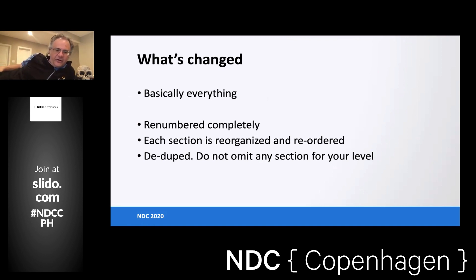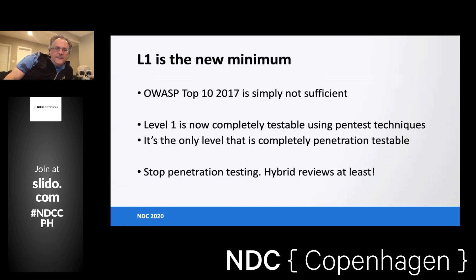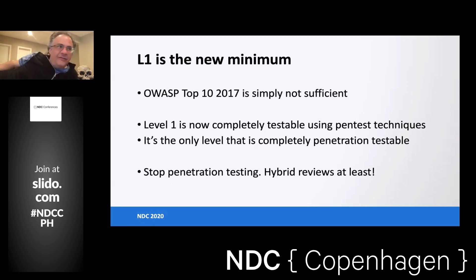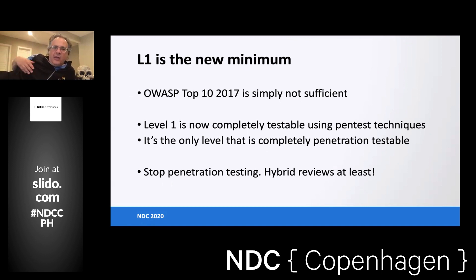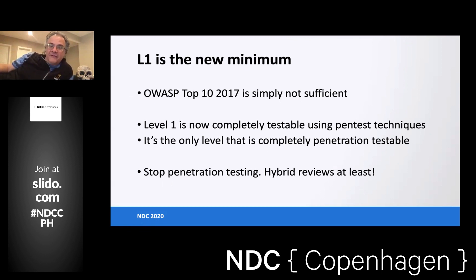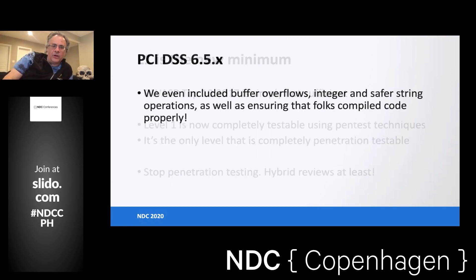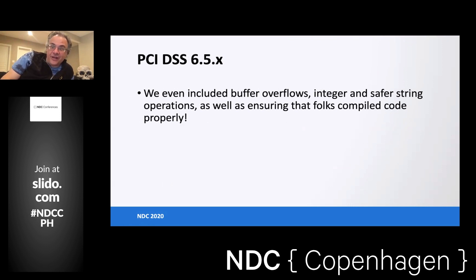L1 is the new minimum. L1 are requirements that every app should follow. The standard is essentially a list of about 300 requirements, each flagged as L1, L2, or L3. L1 is every app — that's the new minimum. All of level one should be testable by your pen testers; it's the only level that's easily testable. You should be doing hybrid reviews with a combination of a penetration tester and a variety of scanning tools to augment that work.